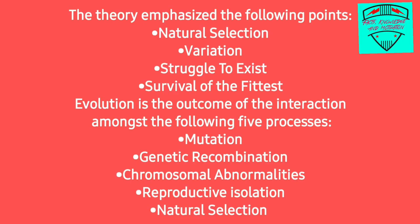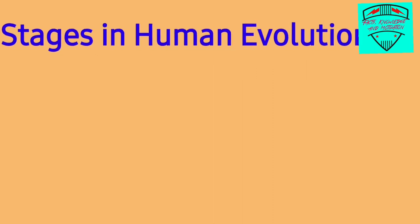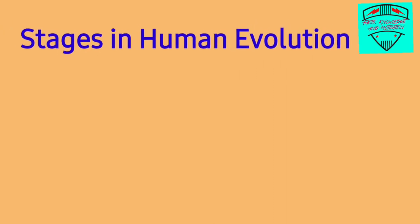The theory emphasized the following points: natural selection, variation, struggle to exist, and survival of the fittest. Evolution is the outcome of the interaction amongst five processes: mutation, genetic recombination, chromosomal abnormalities, reproductive isolation, and natural selection.